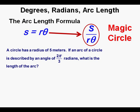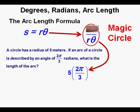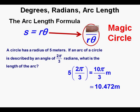A great format for solving arc length problems is a 'magic circle' with s divided by r times theta. Let's apply it: a circle has a radius of 5 meters; an arc is described by an angle of two pi over 3 radians — what is the arc length? We cover up s in the magic circle, leaving r times theta: 5 meters times two pi over 3, which gives 10 pi over 3 meters, or approximately 10.472 meters.